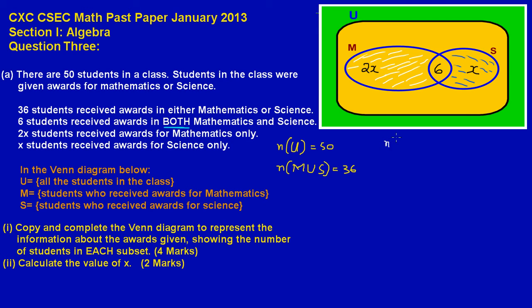So that would be the number of students in M union S compliment. So that would be the number of students in the set M union S compliment. That's what we are going to calculate now, and that is the outside region here. So basically we know the total number of students in the class is 50, and we know that a total of 36 receive awards. So obviously 50 minus 36 would be 14. So basically what that is saying is that 14 students did not receive any awards. There we have represented the information in its entirety here.